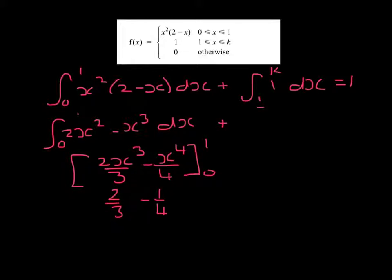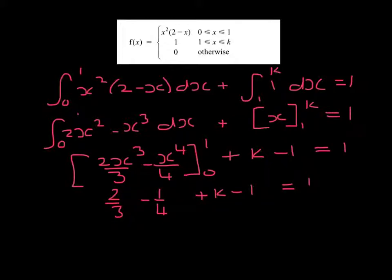1 integrates to give x, and that's between 1 and k, so that becomes k take away 1 when we substitute in the values. And all of this must add to give 1. I now have an equation in terms of k, which I have to solve. And we end up with a value of k equal to 19 over 12.